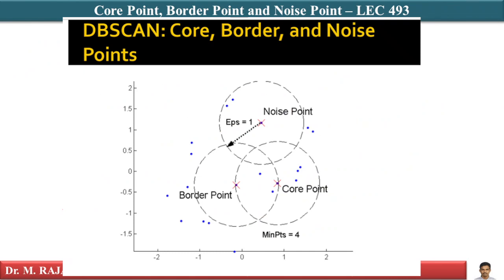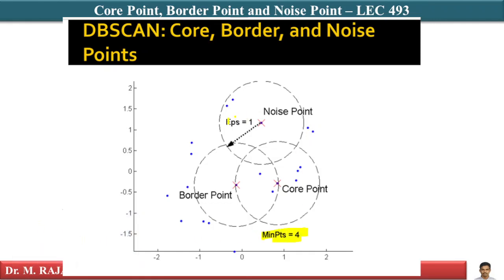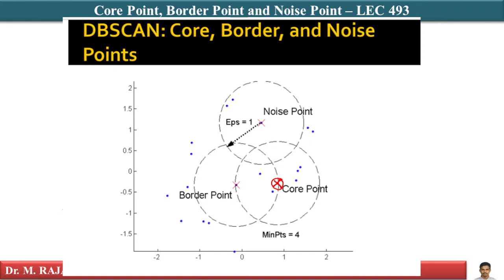To understand this concept I'll go to the slideshow we used earlier — I'll provide the link in the description. Here I have min_points equal to four and epsilon equal to one. Let's look at a particular point. When I draw a circle around this point, I have two, three, four, five points inside the circle, which is more than min_points of four. So this point is a core point.